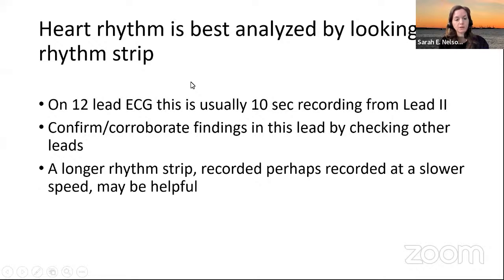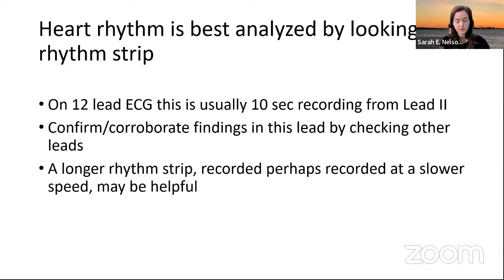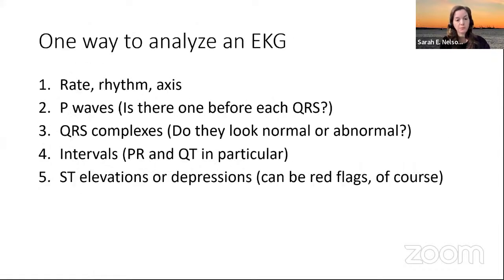Usually when looking at an EKG, one of the major things to look at are some of the leads at the bottom of the EKG. That basically gives you 10 seconds of an EKG, which allows you to pick up findings on a beat-to-beat basis. You're able to confirm or corroborate findings by checking the other leads. Sometimes a longer rhythm strip can be helpful, but sometimes you can get all the information you need from an EKG.